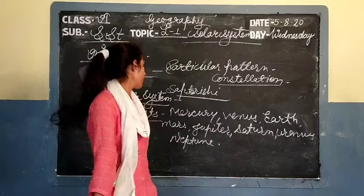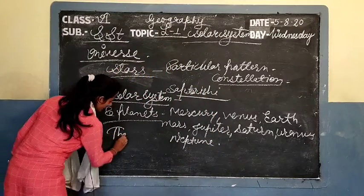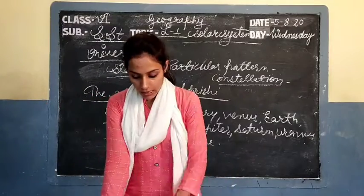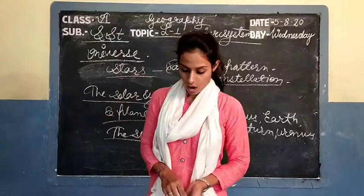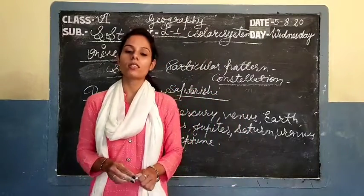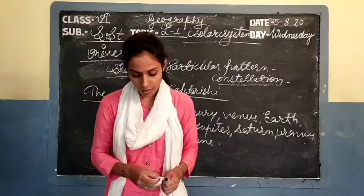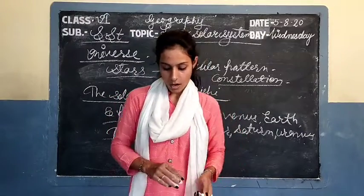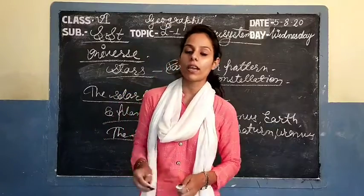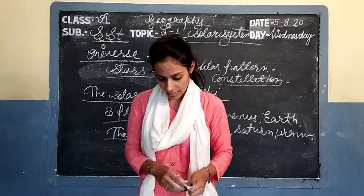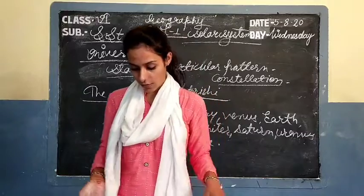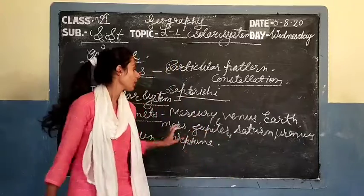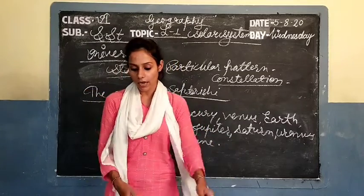In the solar system, the first member is the sun. The sun is the biggest member of the solar system. All the planets and satellites revolve around the sun. It is thus the center of the whole solar system. Jo sun hota hai, woh solar system ke bilkul center mein hota hai.